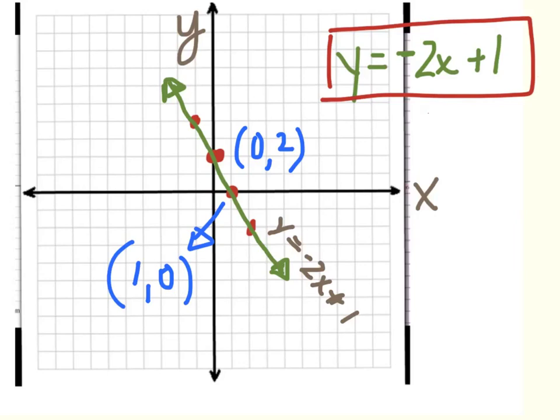This is almost a complete graph. The only thing I would need to add is if I was counting by something other than 1s, I would want to label the axis intervals. I'm just counting by 1s, so I don't need to label those — but if I wasn't, I would want to label those.